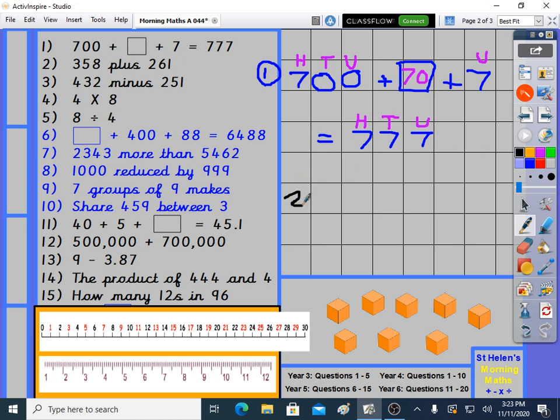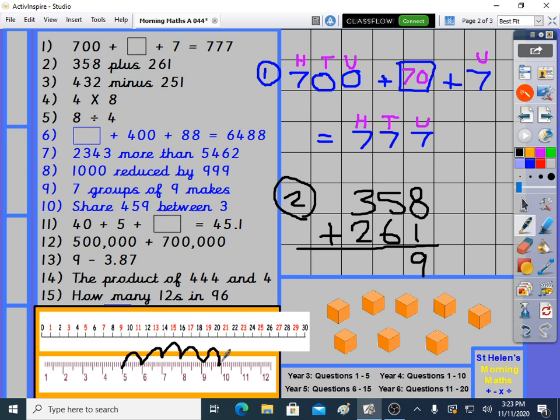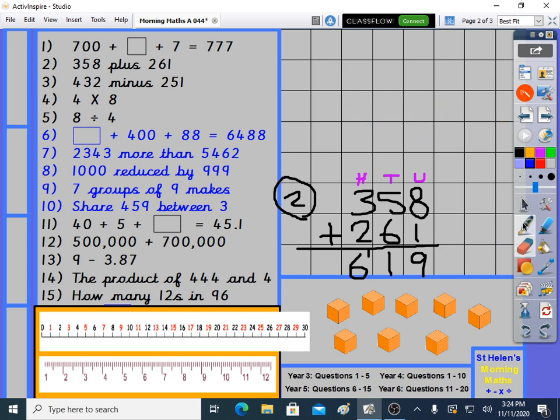Question 2: Column addition practice, standard method. 358 plus 261. 8 plus 1 is of course 9. 5 plus 6, let's check on the number line, takes me to 11. 1 carry the 1. 3 plus 2 is 5, plus 1 is 6. It's not really worth 6, it's worth 600 because of units, tens and hundreds. The answer is 619. Make sure your answer's got bigger after you've done a plus question, because it usually does.